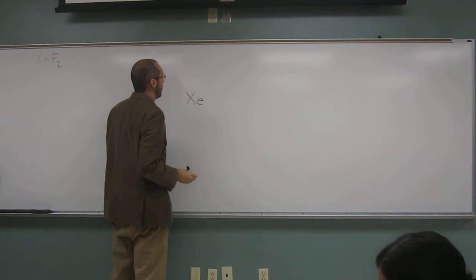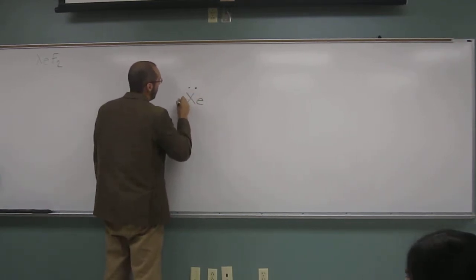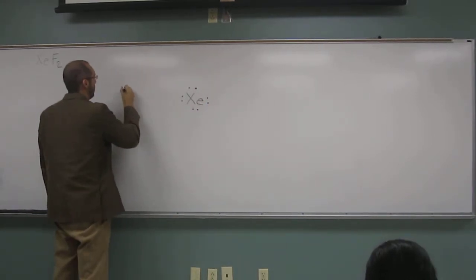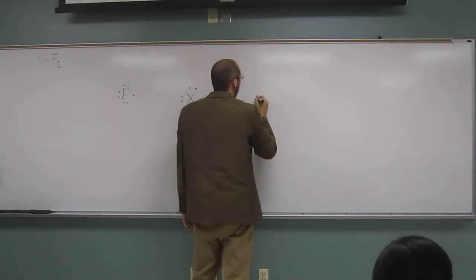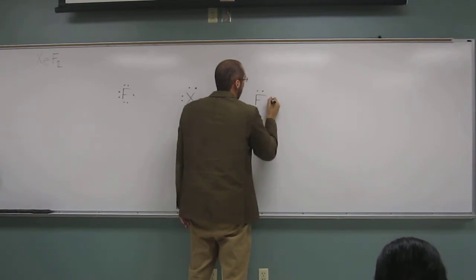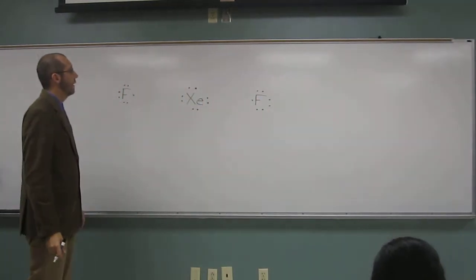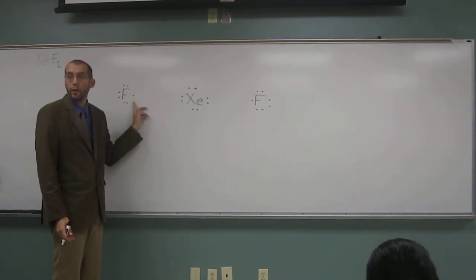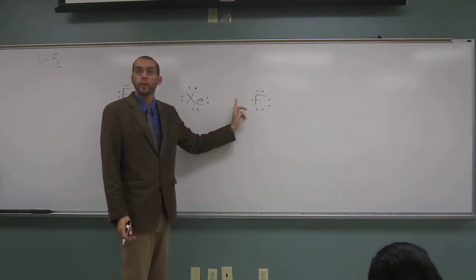So the first thing we're going to do is draw the Lewis structure of the particular atoms. Okay, so hopefully you guys see we need one electron to bond to fluorine here, and one electron to bond to fluorine here.